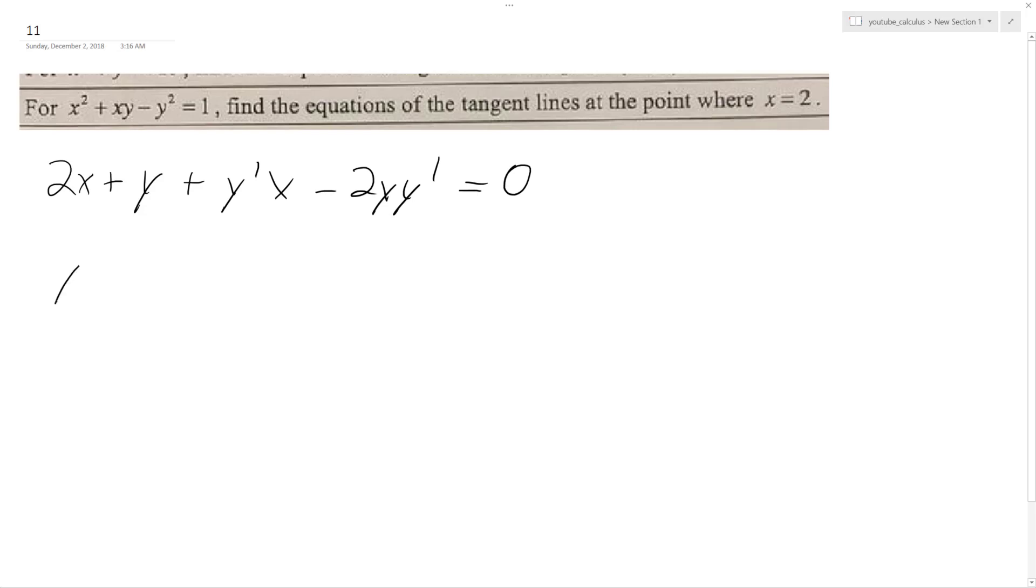Ultimately, when I rearrange everything here, I get y prime is equal to negative 2x minus y over x minus 2y.